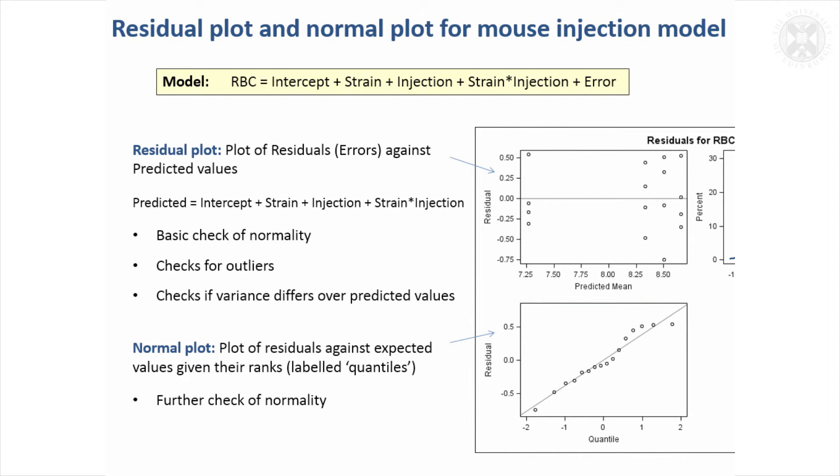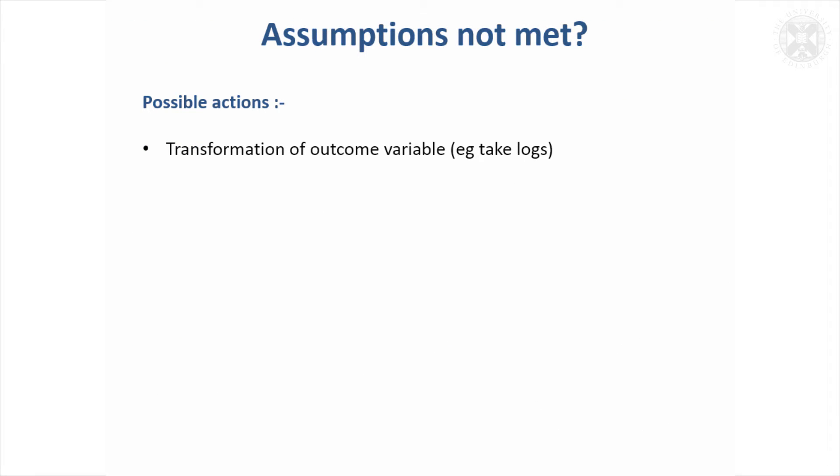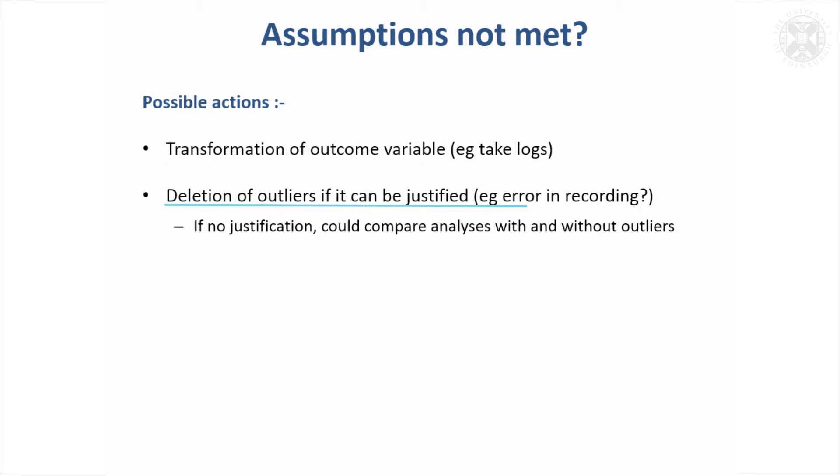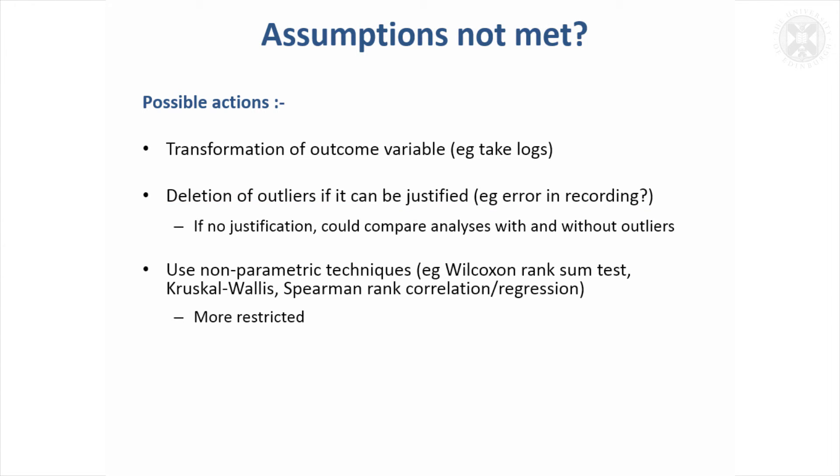In this example, the errors were suitably distributed to do the general linear model, but sometimes the model isn't suitable. You could consider a transformation of the outcome variable—try taking logs, for example. You could look for outliers and think about whether you can justify taking them out. It's important to justify it—you can't just say it's a bit low so I'll take it out. If you can't justify it, try analyzing the data with it in and out to see if it makes a big difference.